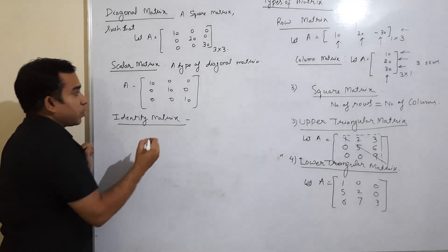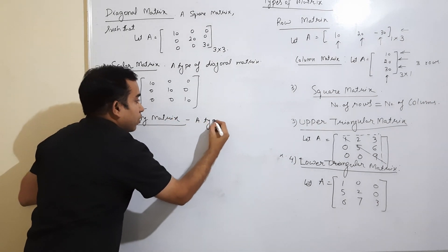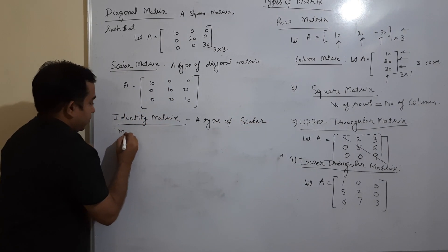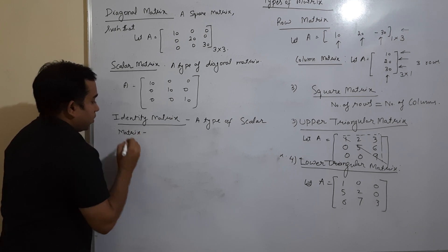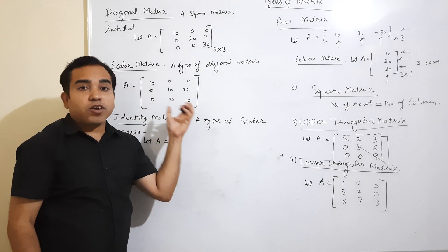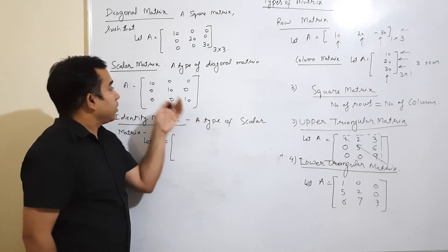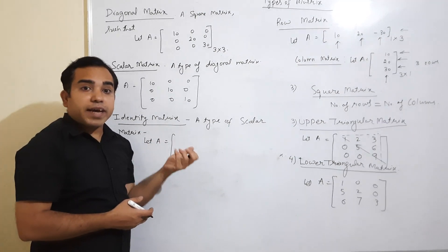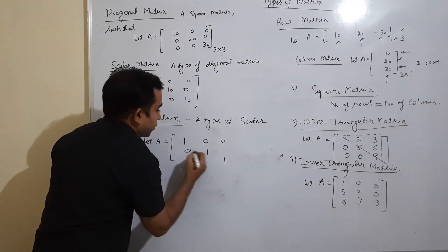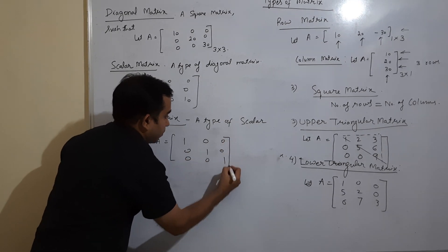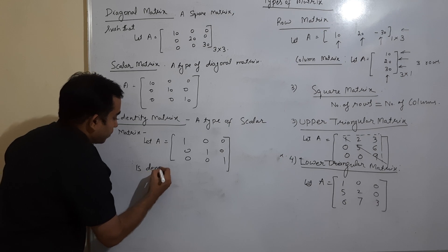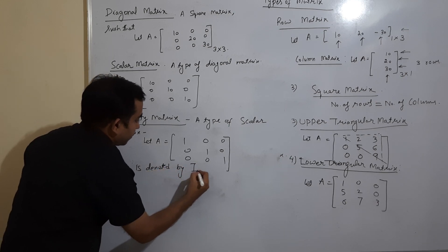An identity matrix is a type of scalar matrix. In a scalar matrix, all diagonal entries are the same; but in an identity matrix, all diagonal entries must specifically be one. So all off-diagonal entries are zero and all diagonal entries are one. This is the identity matrix. It is generally denoted by the capital letter I.